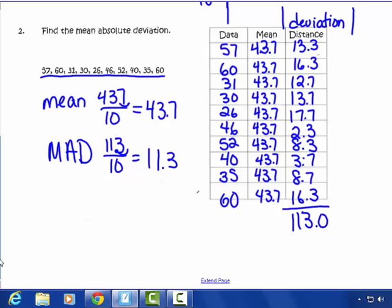On average, mean, the distance, deviation, absolute value distance, away from my data points is about 11.3 from my mean of 43.7.